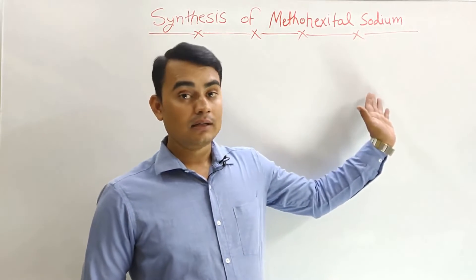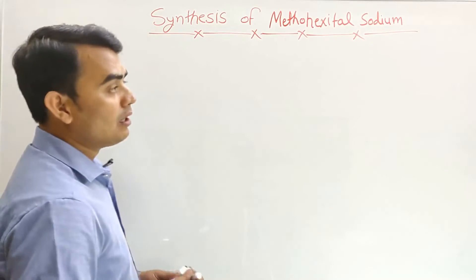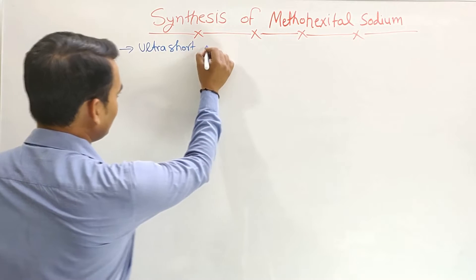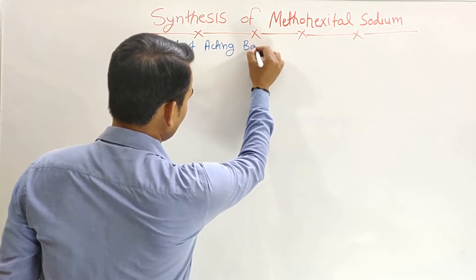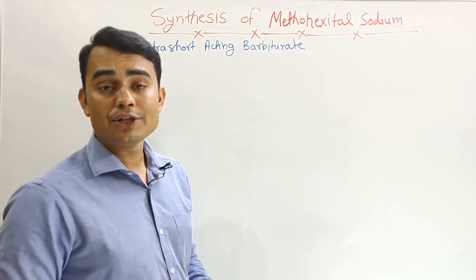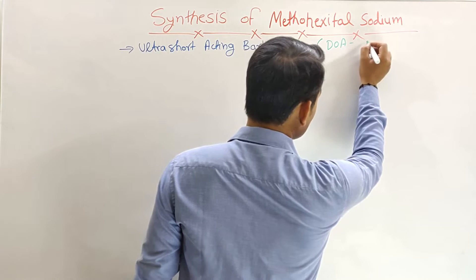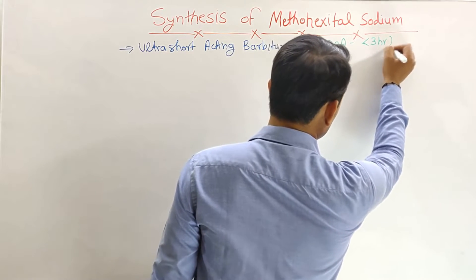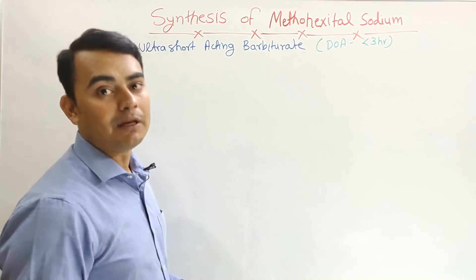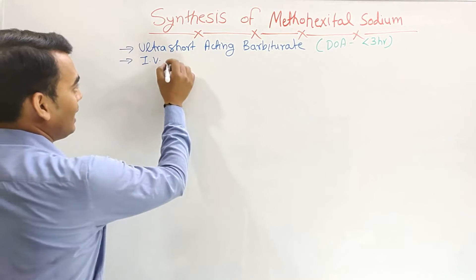Methohexital sodium is a salt; the main constituent is methohexital, and it is always present in the form of the sodium salt. Methohexital sodium is an ultra-short acting barbiturate. Ultra-short acting means the duration of action of the drug is less than 3 hours, and the onset of action is within 15 minutes. Methohexital sodium is mainly given IV — it is preferred for IV injection and IV administration.